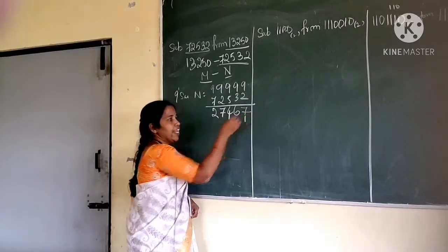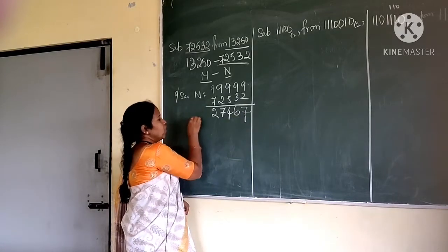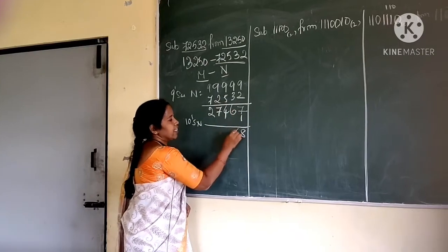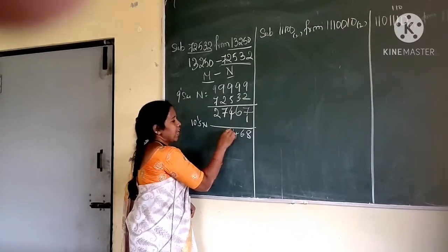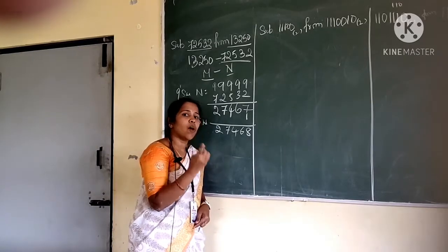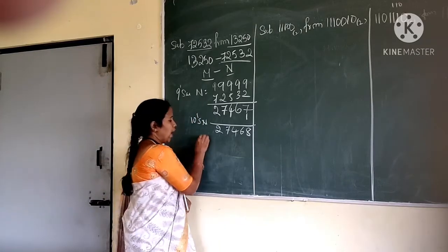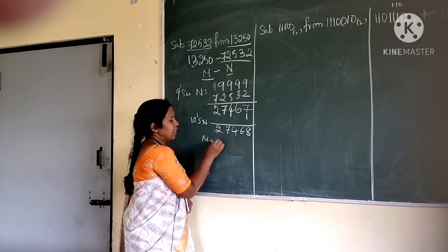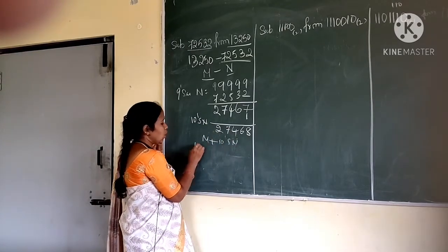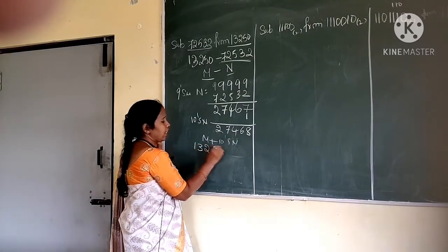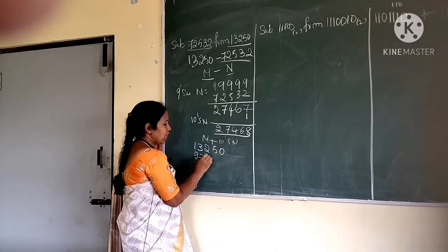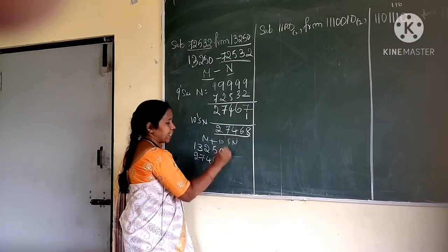The 10's complement is adding 1 to the 9's complement. So the 10's complement of n — what you are getting is 2, 7, 4, 6, 8. First step is adding m to r's complement of n. So m plus 10's complement of n: m value is 13250 plus 10's complement of n which is 27468.